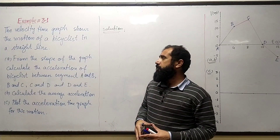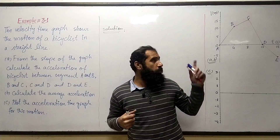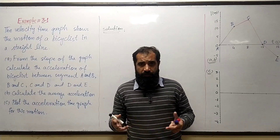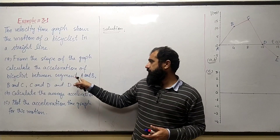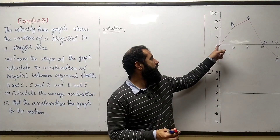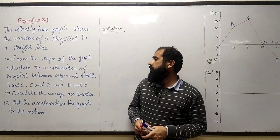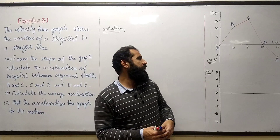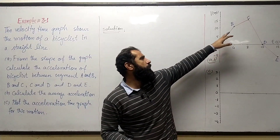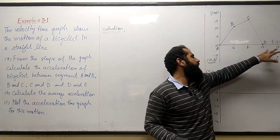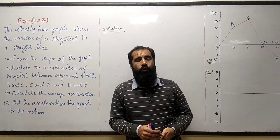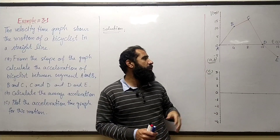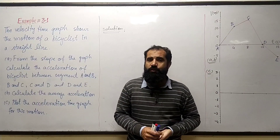Question A asks us to calculate the acceleration of the bicyclist for different segments from the slope of this graph. The segments are: A to B, B to C, C to D, and D to E. From the velocity-time graph we have to calculate the slope, which gives us the acceleration.